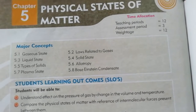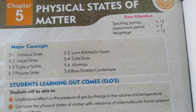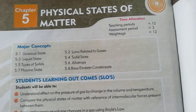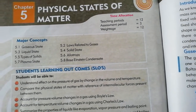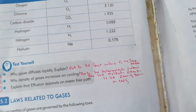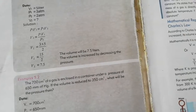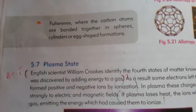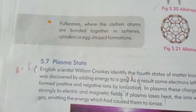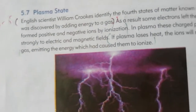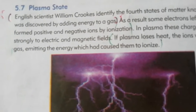Assalamu alaykum students. This is the book of chemistry for 9th class students, chapter number 5. The chapter name is 'Physical States of Matter' and today my topic is plasma. Plasma is the fourth state of matter. Today I am teaching about plasma. This topic is on page number 114 of your book.